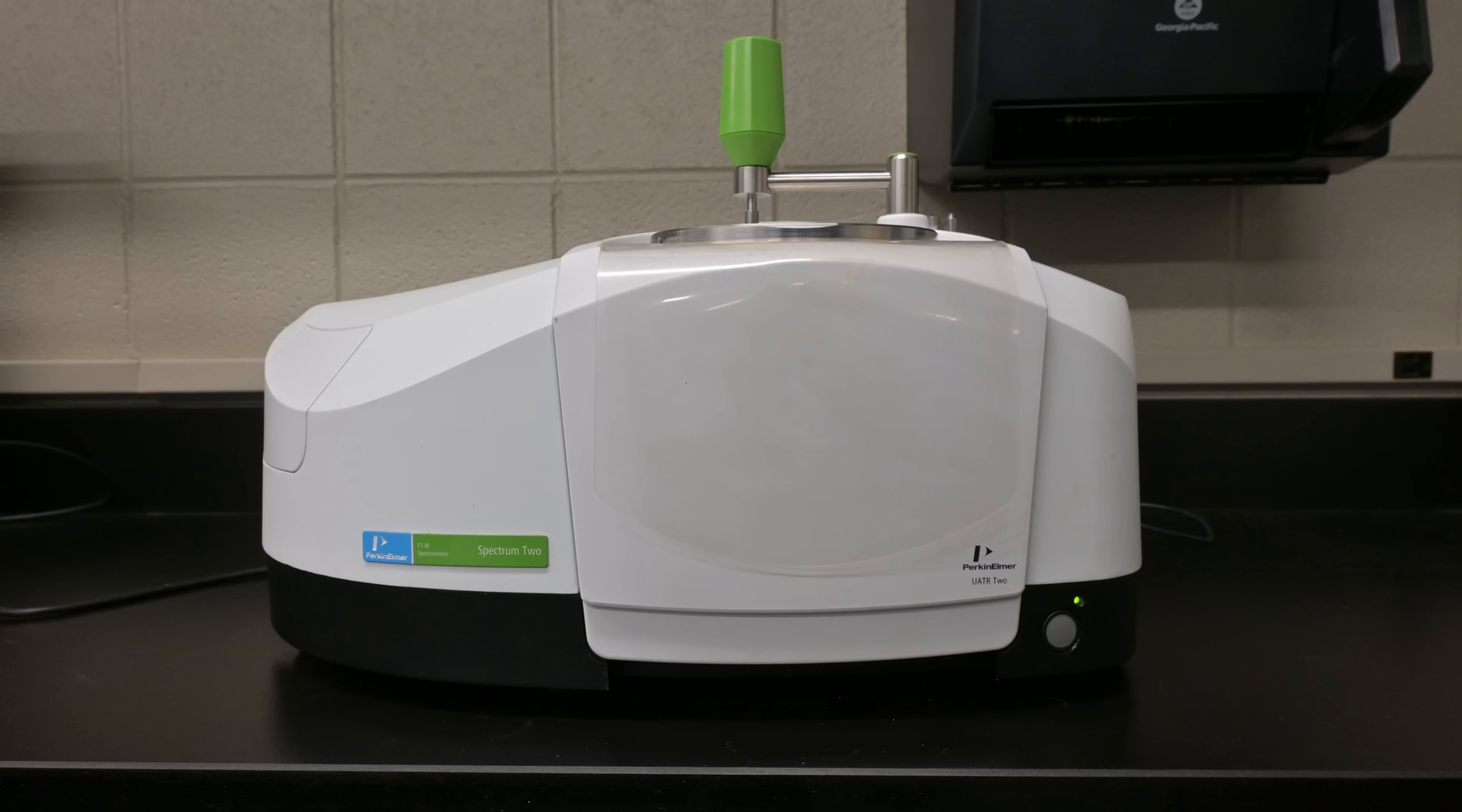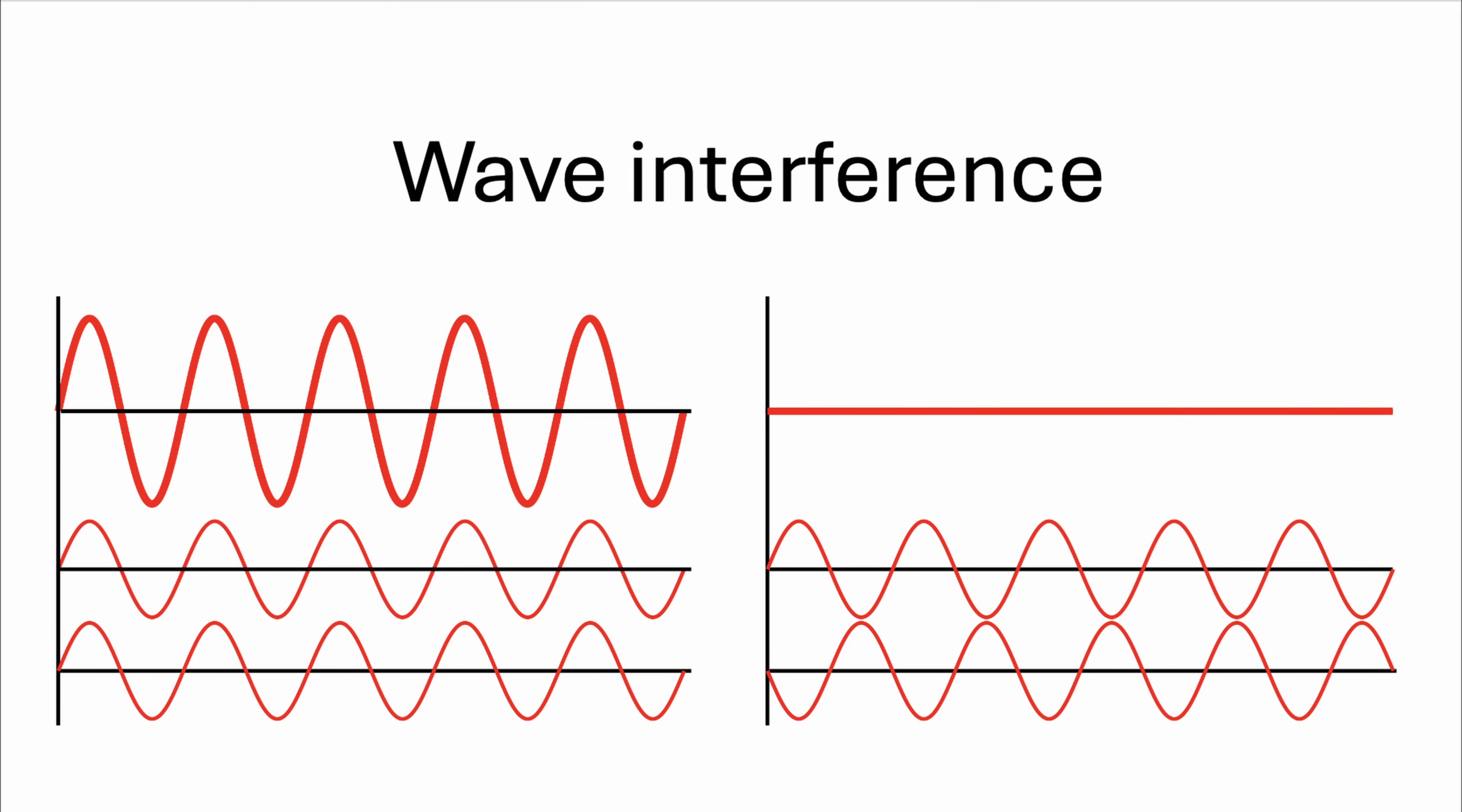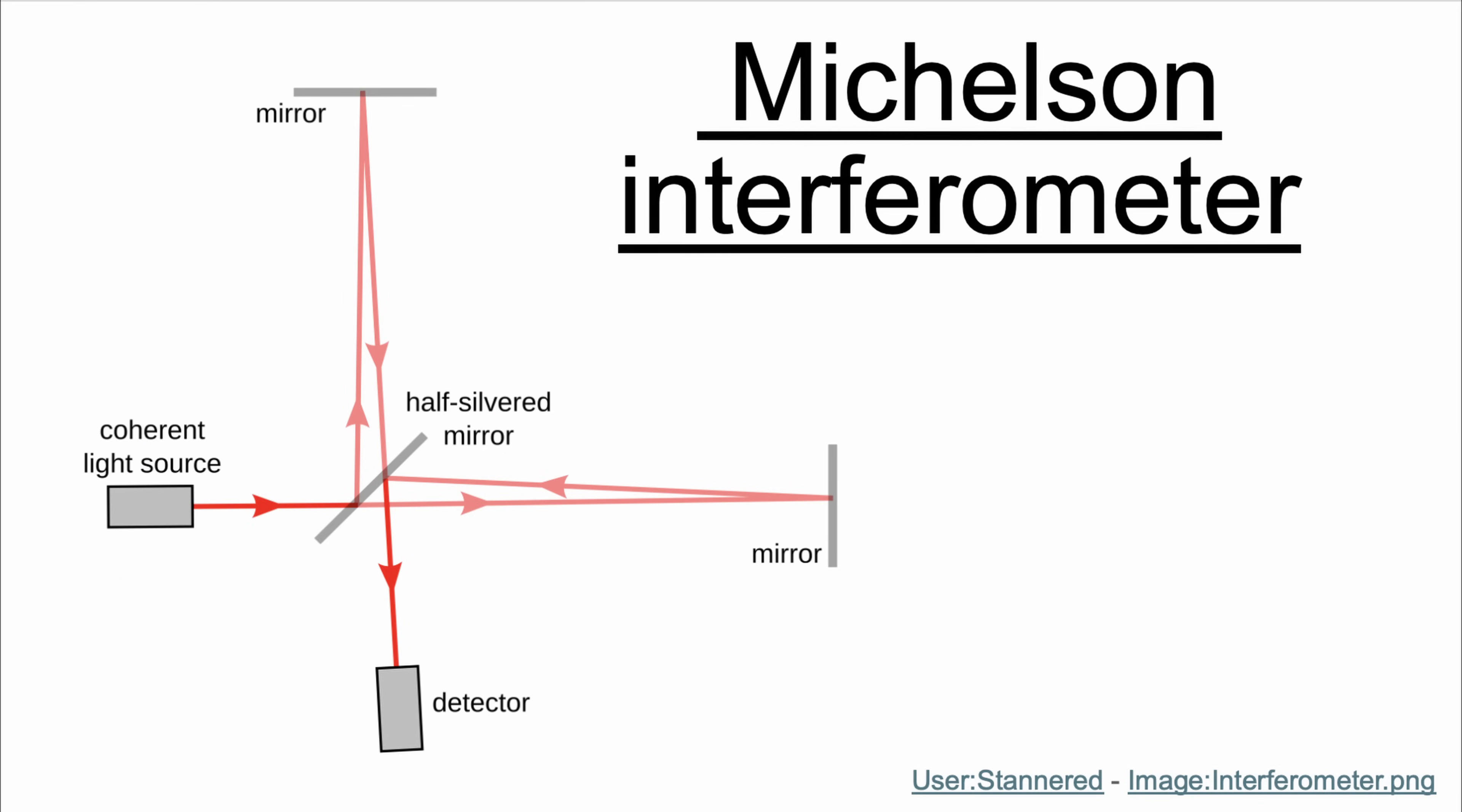The interferometer in an FTIR spectrometer is a device that precisely analyzes IR radiation by creating patterns of interference, essentially how two or more waves combine and overlap. This is crucial because directly measuring infrared absorption across a broad spectrum simultaneously would be challenging. Instead, the interferometer cleverly encodes information about all the wavelengths at once. So how does an interferometer work?